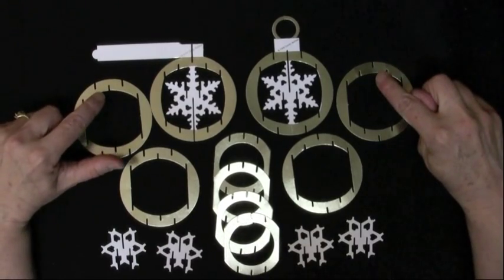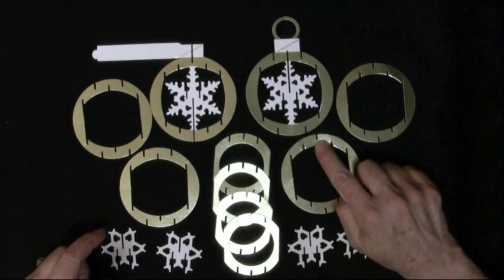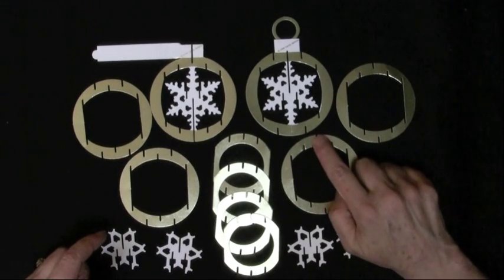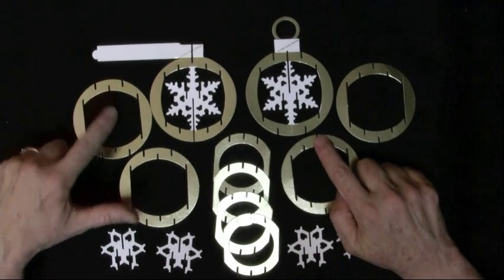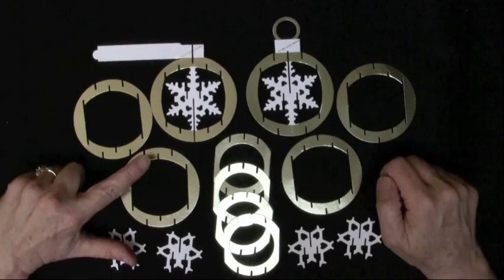So these medium pieces, if you notice, one pair has a little slot in the middle that's on the outside edge and the other pair has the middle slot on the inside edge. That's an important thing to notice.